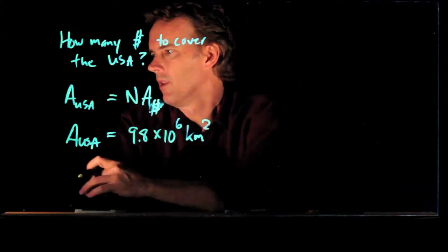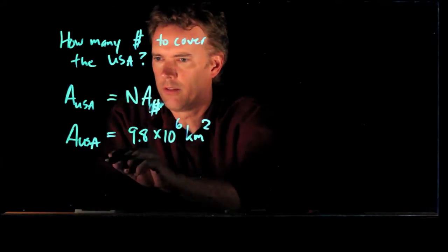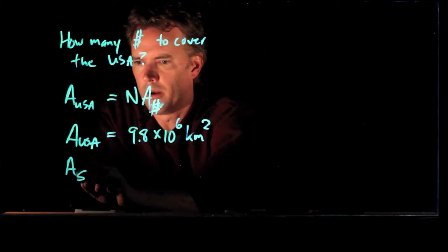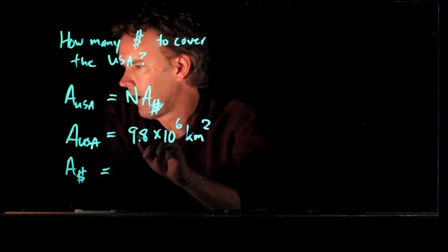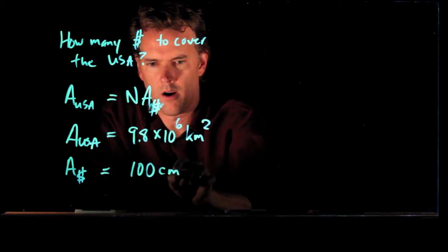And if you look up the area of a dollar bill, you know how big a dollar bill is. What's the area of a dollar bill? It is around approximately 100 square centimeters.